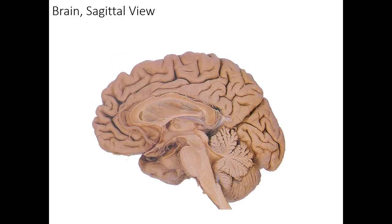Moving on to the next slide, we can now see the mid-sagittal view of the brain. We've cut right down the longitudinal fissure and we can see the inside portion of the brain. Now the first thing we always want to get is our landmarks. The first main thing we see is the corpus callosum. The corpus callosum is the white matter tracks that connect the two hemispheres — the left and right hemispheres — of the brain.